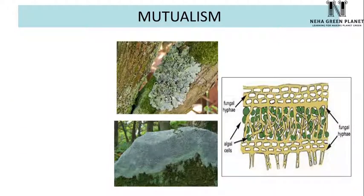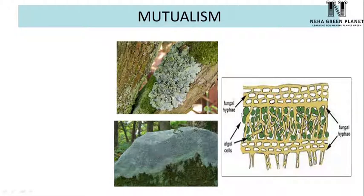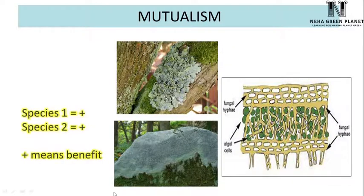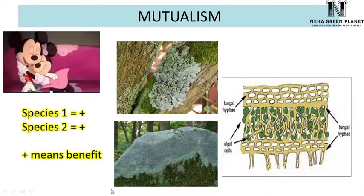Another example of mutualism is lichen, which is an association between fungus and algae. Fungus, which generally lacks chlorophyll, forms the outer layer of lichen and provides protection to the algae inside. Algae cells help in photosynthesis and provide food to the fungus. Since both species benefit, this interaction is mutualism.